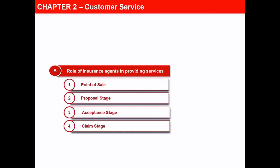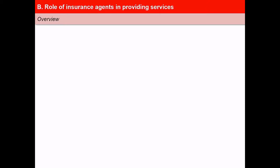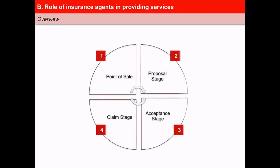The role of an agent begins at the stage of sale and continues through the duration of the contract. There are four main stages in the customer lifecycle and the agent has a critical role in each of these stages. These are: point of sale, proposal stage, acceptance stage, and the claim stage.